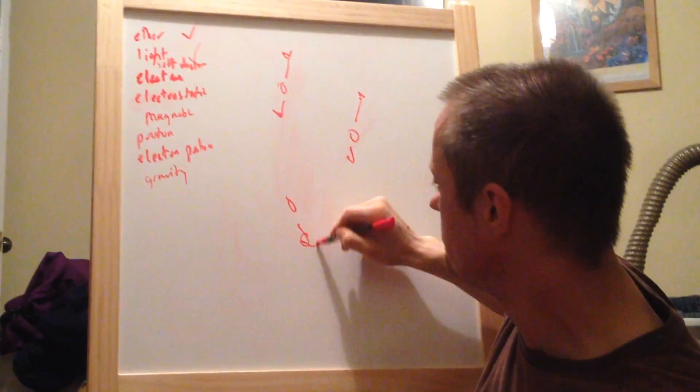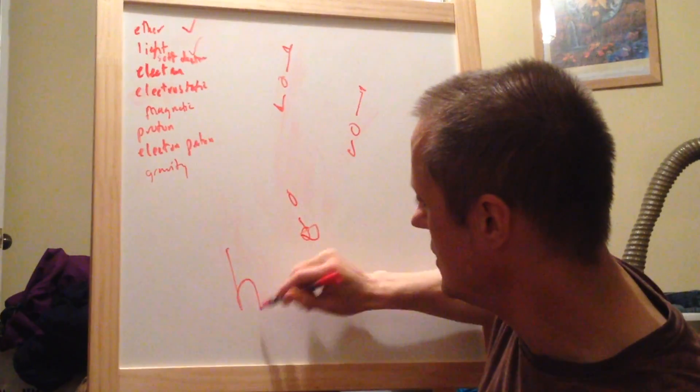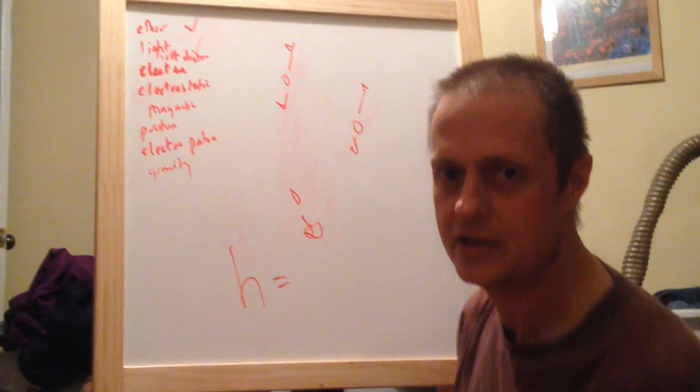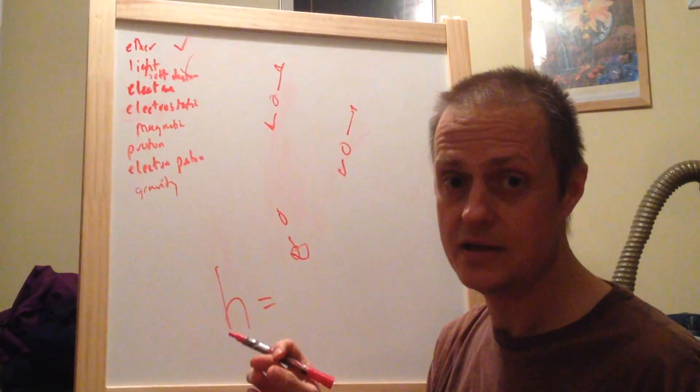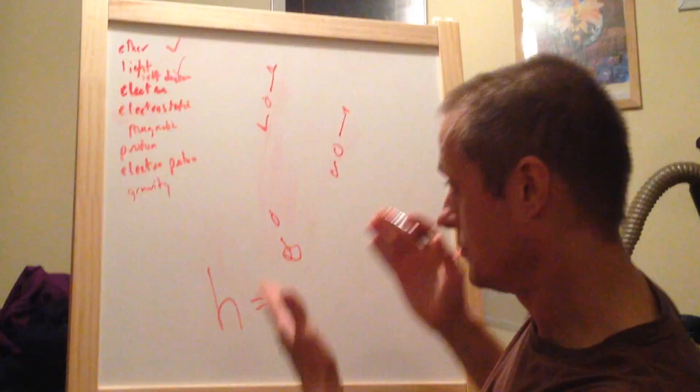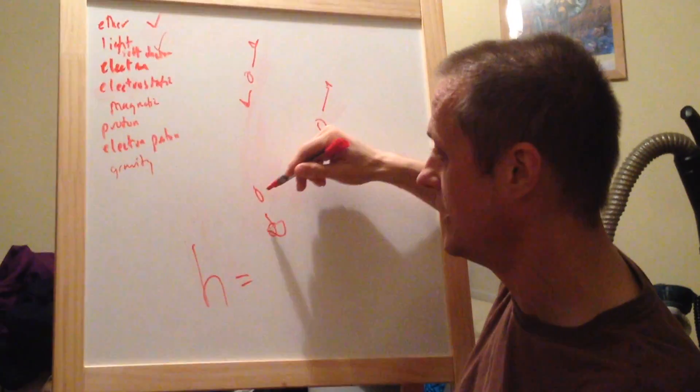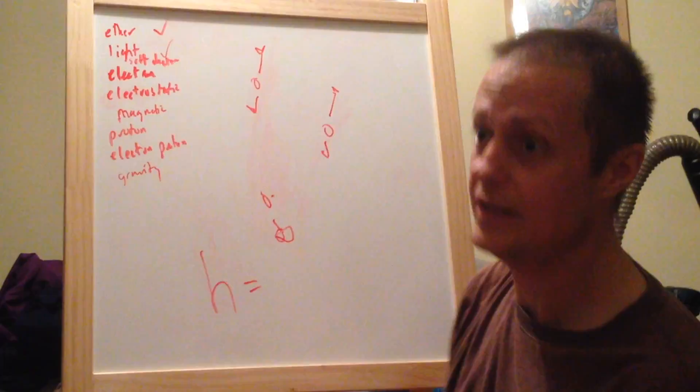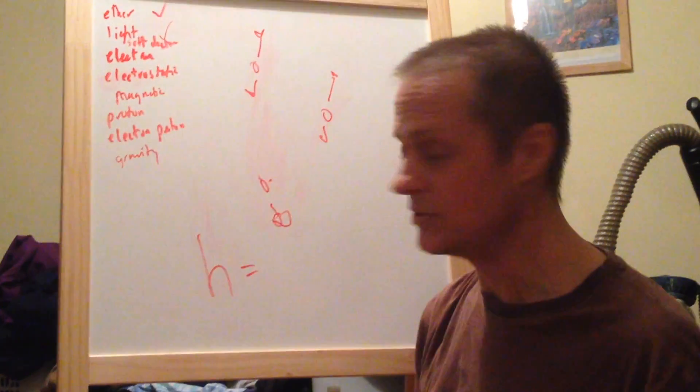And that's why science has something called Planck's constant, which represents the letter H. Planck's constant basically says energy exists in discrete bundles. And hence, the reason why is because there is an ether throughout space, and every ether particle has the same energy. Hence, Planck's constant, which says energy exists in discrete bundles.